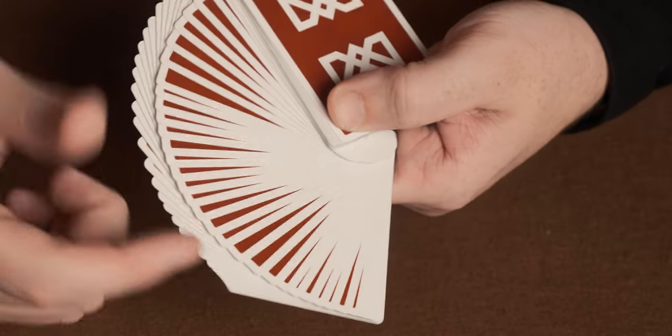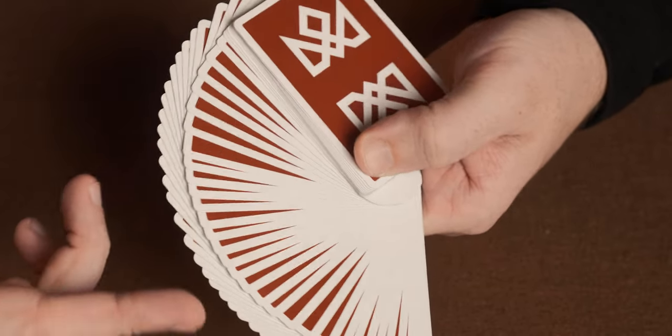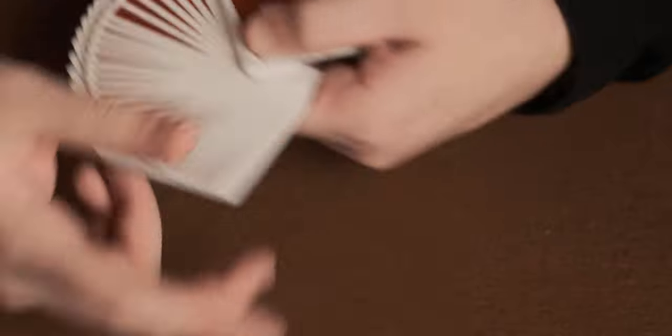When you look through them you've got a really nice white border and it's nice and thick enough to show the white and you've also got the red of the cards coming through as well.